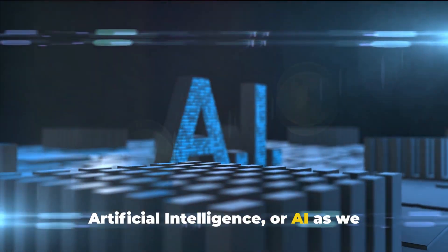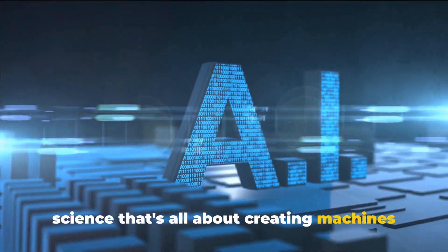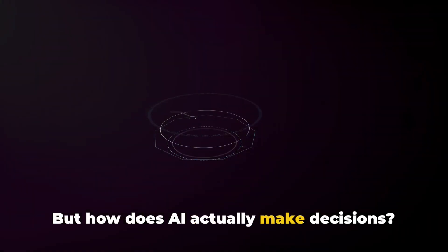Artificial intelligence, or AI as we often call it, is a field of computer science that's all about creating machines that can think and learn like humans. But how does AI actually make decisions?